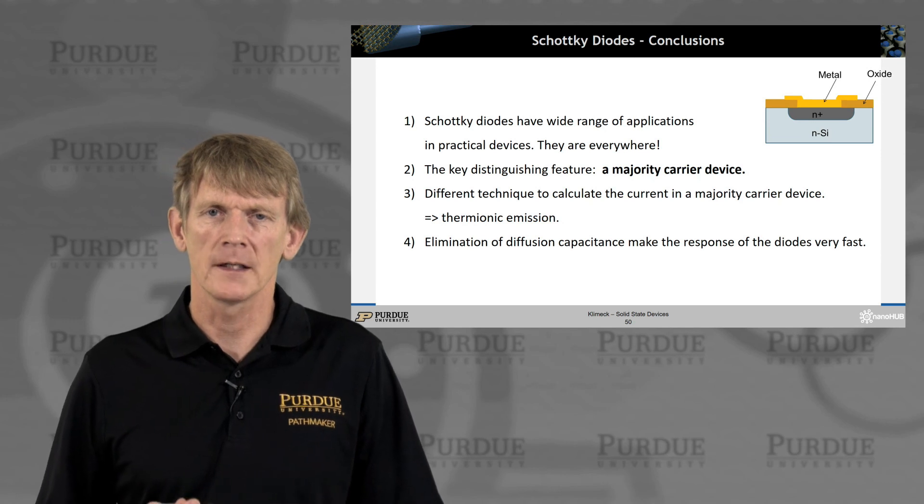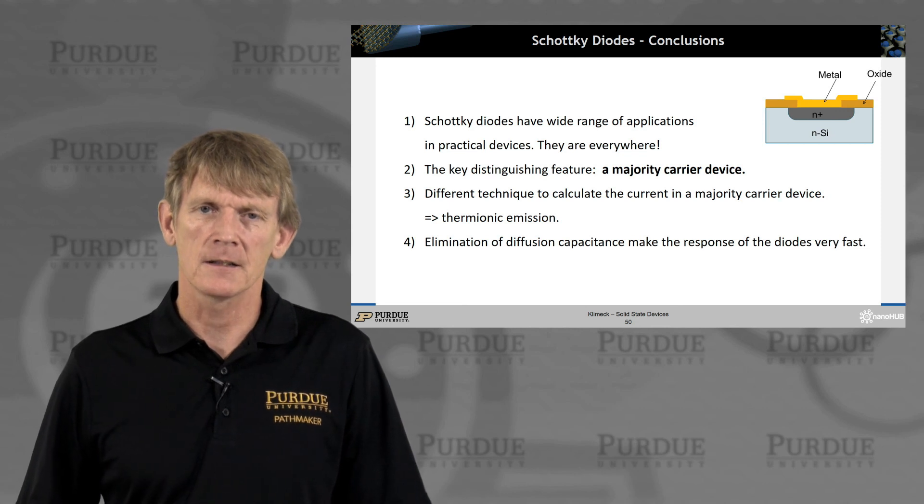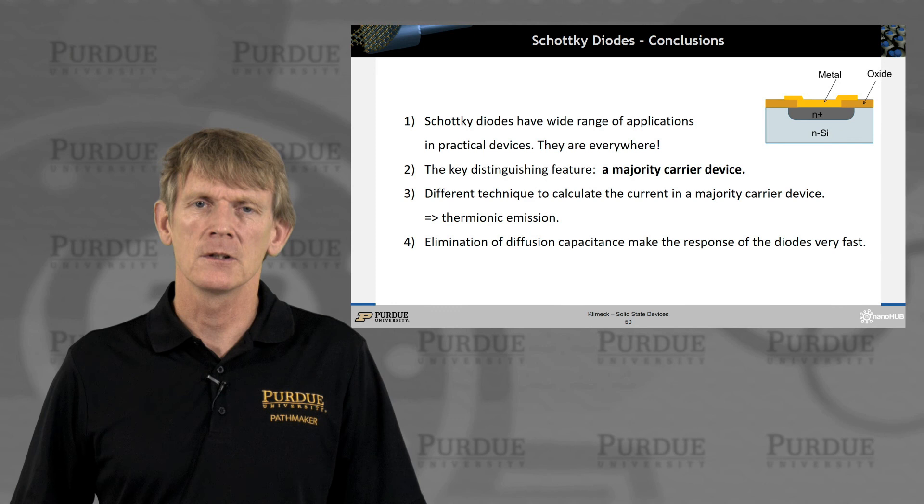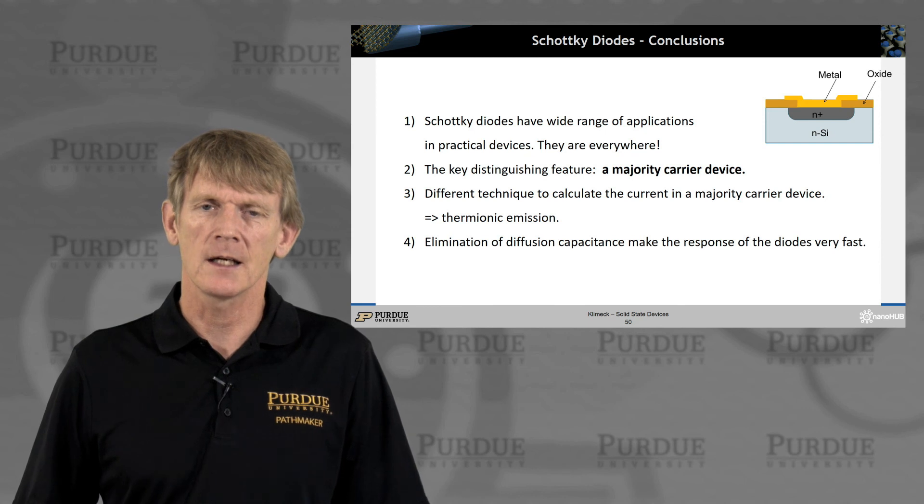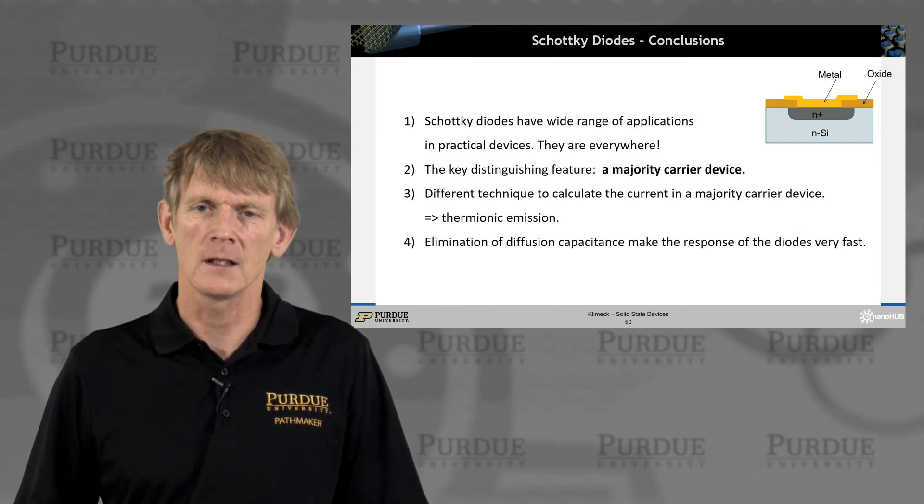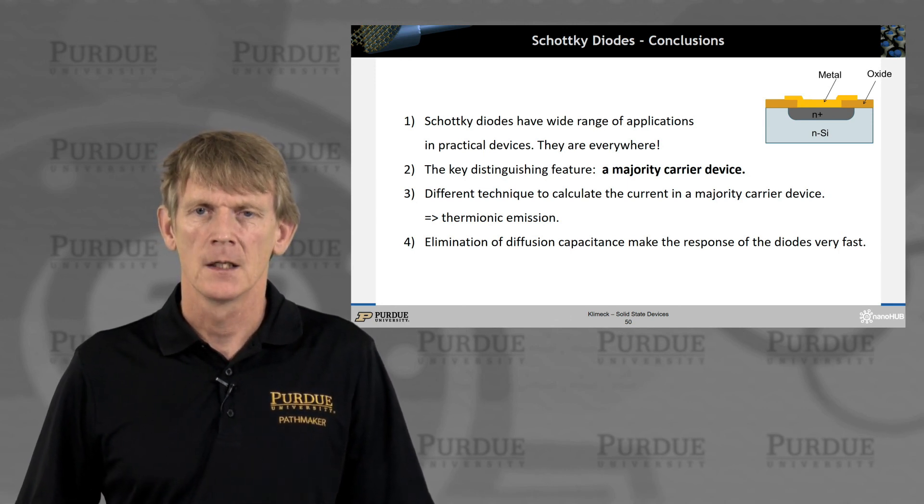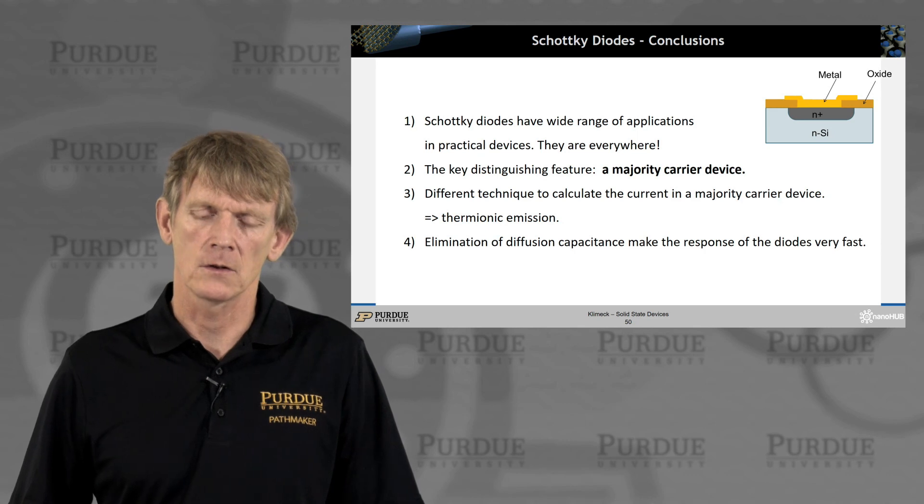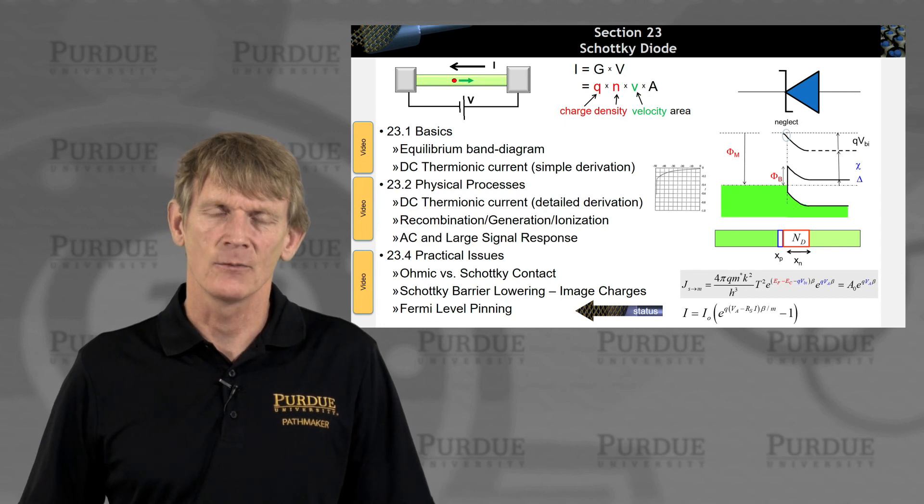And with that, I'd like to summarize that Schottky diodes are important. They are everywhere. They're different from a PN junction in that they're purely a majority carrier device. That means they're fast. There is no diffusion coefficients that you need to keep track of. You have a different theory, a theory of thermionic emission. And we will be using that kind of approach later for BJTs as well, that are very similar then to modern transistors where you have ballistic transport. And the elimination of the diffusion capacitance makes these devices really, really fast. So, with that, I'll conclude my section here. And I thank you very much for your attention. Thank you. Bye-bye.